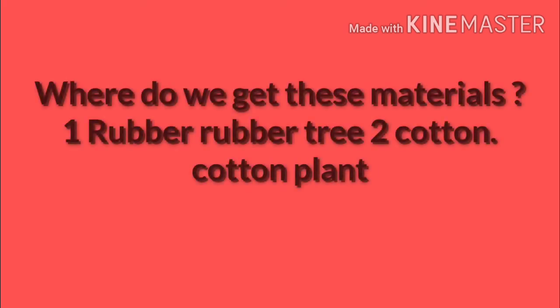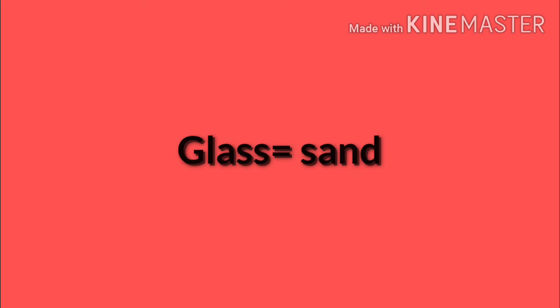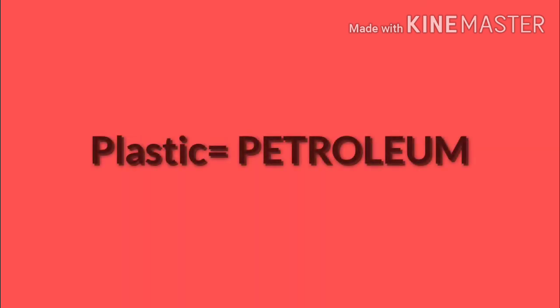Now, coming back to another exercise: Where do we get these materials? Rubber — from the rubber tree. Cotton — from the cotton plant. Leather — from animals. Glass — from sand. Petrol — from petroleum. And plastic is also made from petroleum.